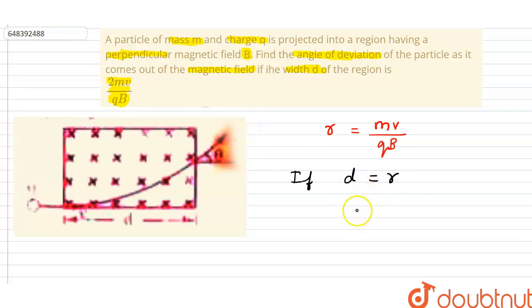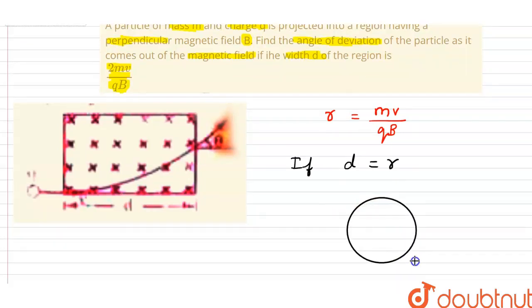Then the angle between the radius and the tangent is 90 degrees. This is the movement of the particle with velocity V. This is the radius...